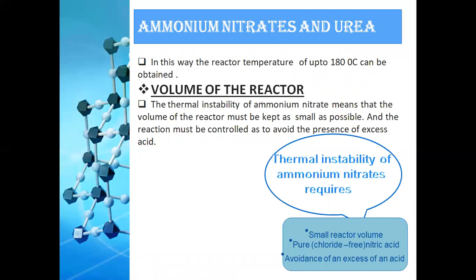The volume of the reactor should be as small as possible because ammonium nitrate is highly thermally unstable. Three factors are necessary to avoid thermal instability: small reactor volume, pure nitric acid free from chloride contents, and awareness of any excess acid.